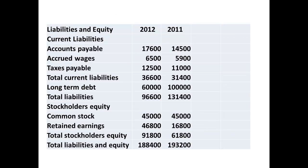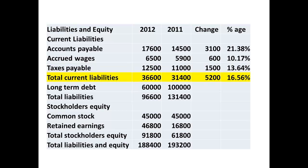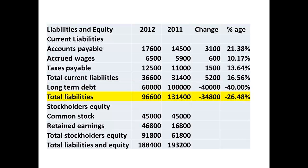Now we can take a look at the changes in liabilities and equity. There has been a small increase in accounts payable of $3,100, representing a 21% change, and a small increase in accrued wages of $600 or 10%, together with a small increase in taxes payable of $1,500. Overall, there has been an increase of $5,200 in current liabilities. The change in long-term debt shows a significant decrease of $40,000, a 40% change. This could be viewed as a healthy sign for the business. The reduction in long-term debt means that there has been an overall reduction in liabilities for the business.